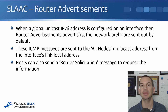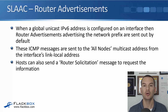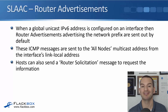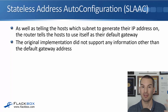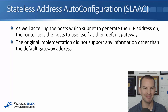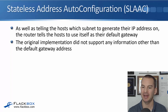So if you use SLAAC, it means that your hosts can get their IP address without having to use a DHCP server. As well as router advertisements going out from the router, hosts can also send a router solicitation message to request that information. The router will also tell the hosts to use itself as the default gateway. But the original implementation did not support any information other than the default gateway address.